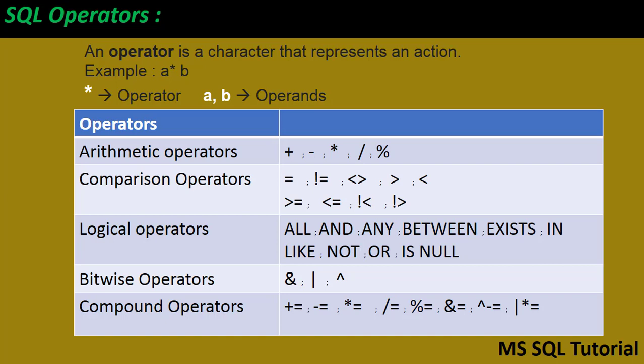First of all, we learn what is an operator and what are the operands. In mathematics or in computer language, an operator is a character that represents an action. An operator is a reserved word or a character used primarily in SQL statements or WHERE clause to perform operations.